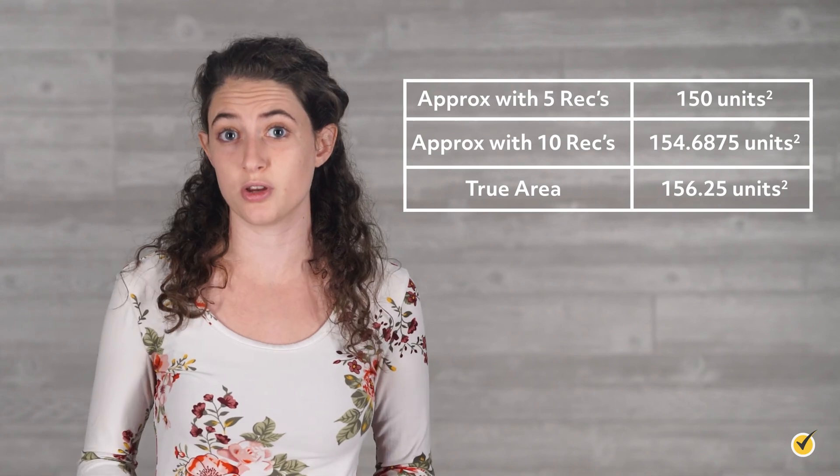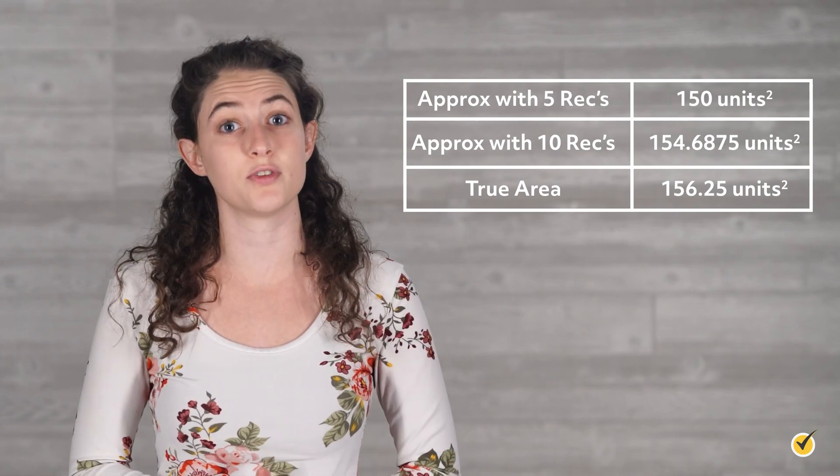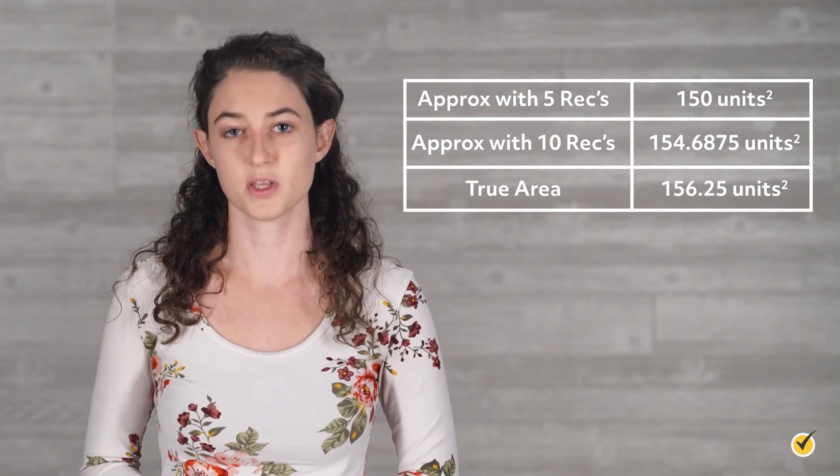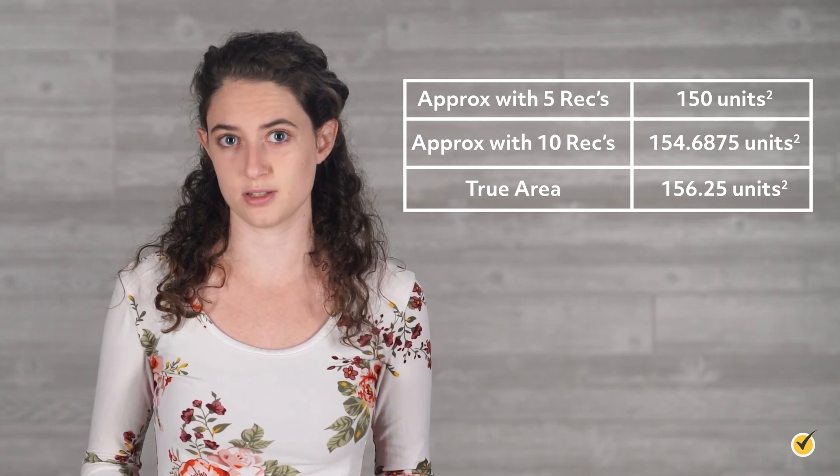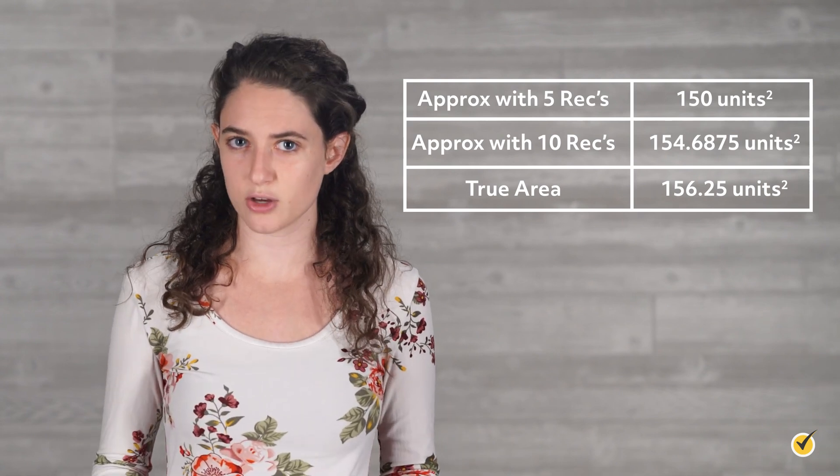The last part of the problem is to compare each approximation to the true area. Using 5 rectangles, we approximated the area to be 150 square units. With 10 rectangles, the approximation was refined to 154.6875 square units. The true area is 156.25 square units. We can clearly see that increasing the number of rectangles in the Riemann sum helped to make the approximation more precise. When calculating the areas of each rectangle, remember to multiply its height by its width, which will sometimes be one unit and other times not. These are approximations of the true area beneath the curve—there will still be some margin of error, but this error can be minimized by using more rectangles. Thanks for watching and happy studying!